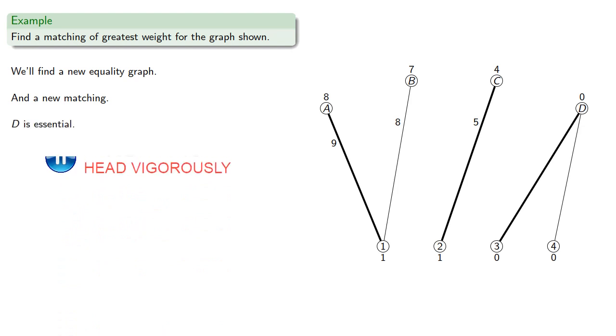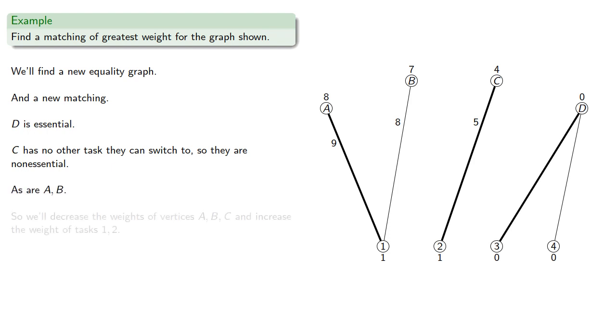D is essential. C has no other tasks they can switch to, so they are non-essential. As are A and B. So we'll decrease the weights of vertices A, B, and C, and increase the weight of tasks 1 and 2.